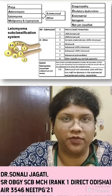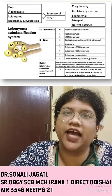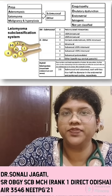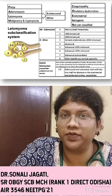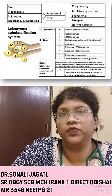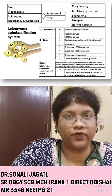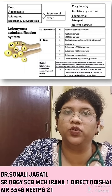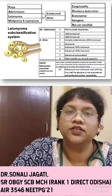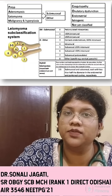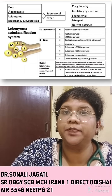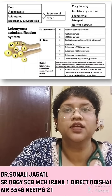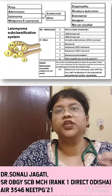Type 4 is when it is intramural. Type 5 and type 6 are about the suberosal component. Suberosal but more than 50% intramural is type 5, and suberosal with less than 50% intramural is type 6. Type 7 is suberosal pedunculated, and type 8 is when it is another type of fibroid — that means it does not arise from the uterus.